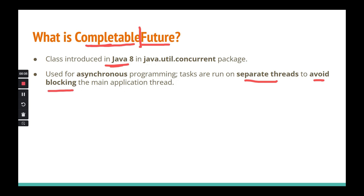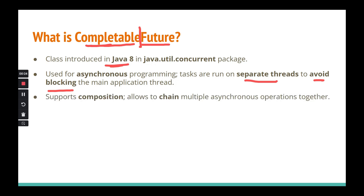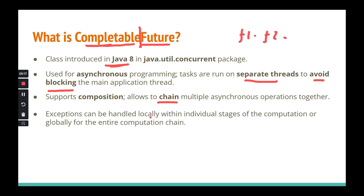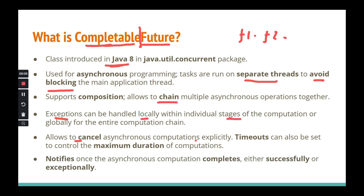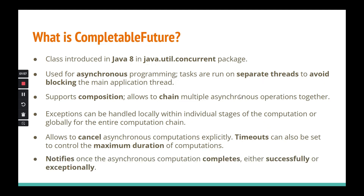CompletableFuture is used for asynchronous programming tasks, designed to avoid blocking the main application thread — as shown in the code example earlier. It supports composition, allowing you to chain future1 to future2 to future3. Exceptions can be handled locally within individual stages. It also allows explicit cancellation of asynchronous computation and setting timeouts.